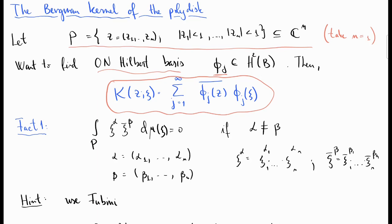The reason why we can compute the Bergman kernel in the polydisc is because there is a relatively simple orthonormal Hilbert basis in this case available. So, there's a typo here, I didn't mean p, I meant p.